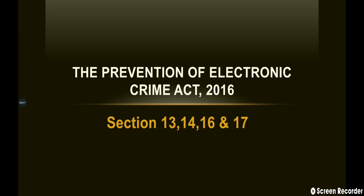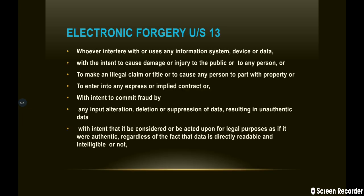Assalamu Alaikum, this is the fifth lecture of the Prevention of Electronic Crime Act 2016. In this video we will discuss sections 13, 14, 16, and 17. Section 13 is about electronic forgery. First of all, we need to know what electronic forgery or digital forgery is — creating a copy or imitation of a document or object with the intention to deceive is called electronic forgery or digital forgery.